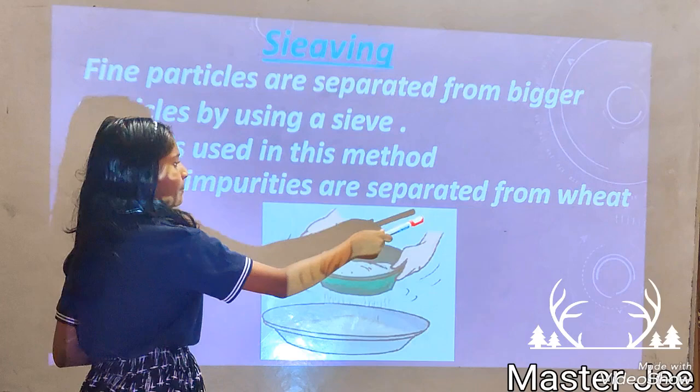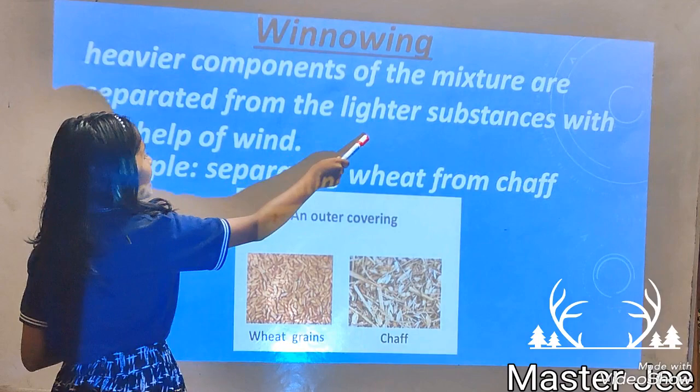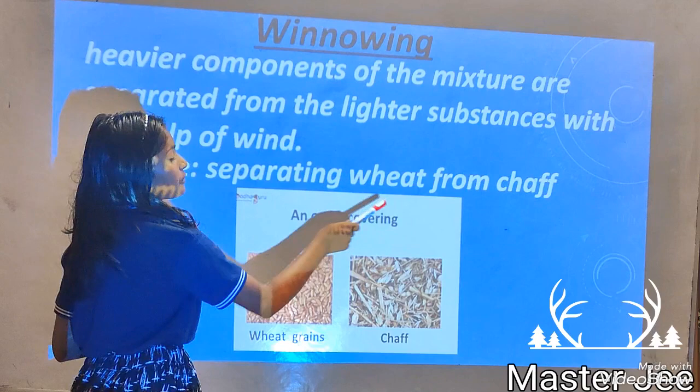Winnowing. Winnowing is a process in which the heavier components of the mixture are separated from the lighter substances with the help of wind. For example, separating wheat from chaff.